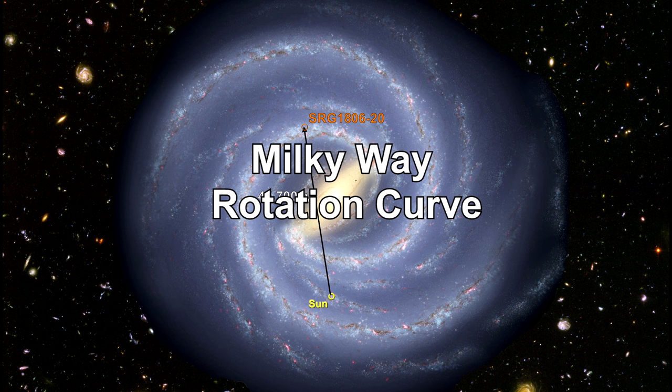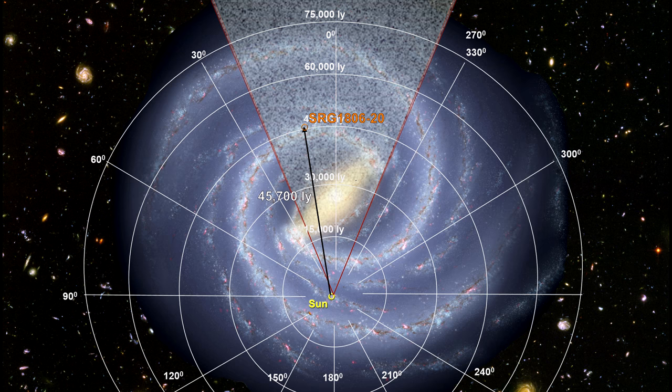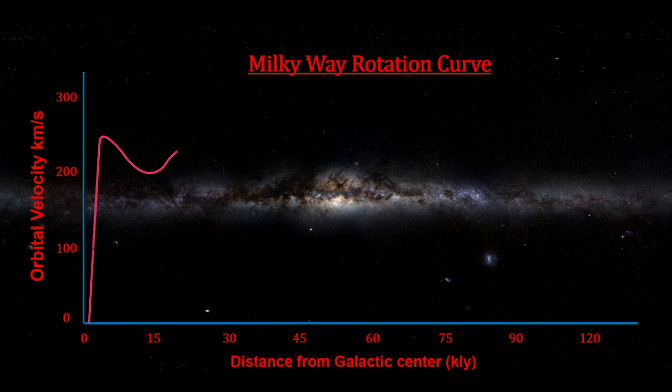To understand how we calculate that the Magnetar SGR 1806-20 is 45,000 light-years away, deep inside the hidden zone, we need to take a look at how kinematic distance calculations and radio astronomy were used to develop the Milky Way rotation curve that we discussed in our 2015 update on dark matter.